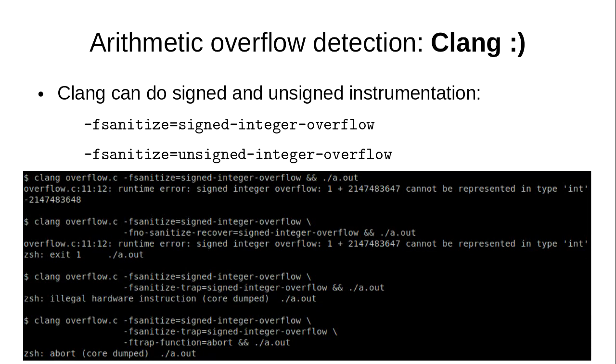Clang adds unsigned integer overflow detection. I'd really like to get the kernel clean on both signed and unsigned integer overflows, but there are many intentional unsigned overflows in the kernel that would need to be marked explicitly. Clang allows a variety of failure modes: warn and continue, warn and abort, abort without warning. I'd like to get GCC to that level for a better way to handle these conditions inside the kernel.